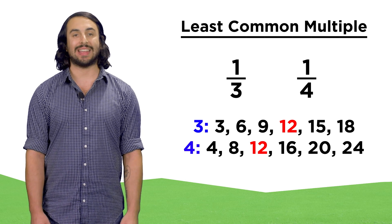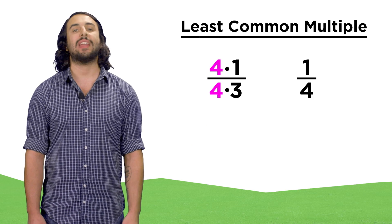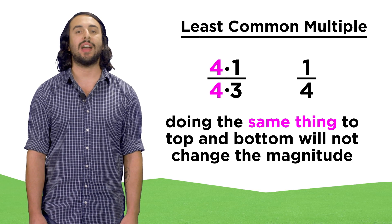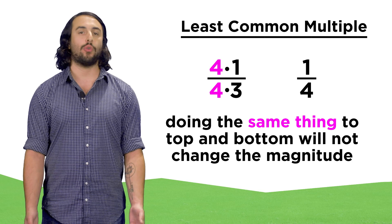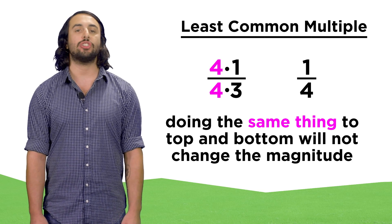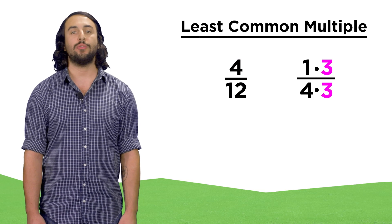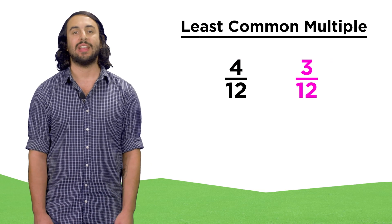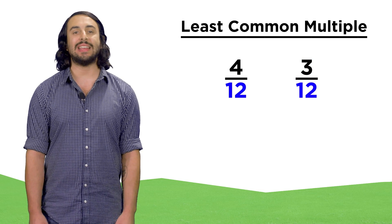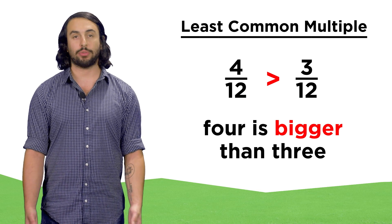So what do we need to do to get twelve on the denominator for both of these fractions? For one third, we can multiply both top and bottom by four. If we do this, we are not altering the magnitude of the fraction, because four over four is one, and anything times one is itself. But we can change the way the fraction is expressed — now we have four twelfths. For one fourth, we can multiply by three over three, giving us three twelfths. Now that they have the same denominator, it is easy to see that four is bigger than three, so four twelfths must be bigger than three twelfths.